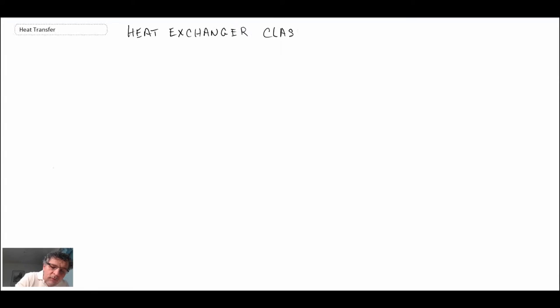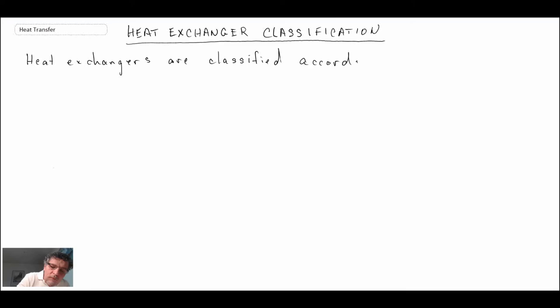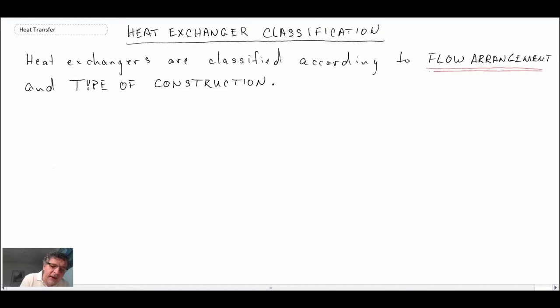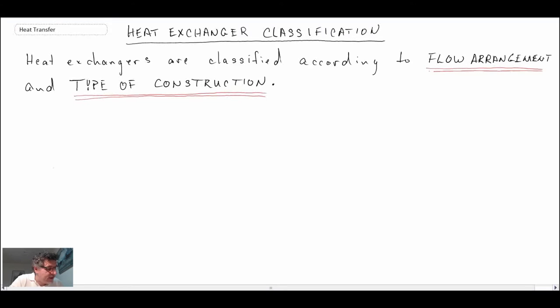In this segment we're going to be looking at the ways that heat exchangers are classified. The two ways we classify heat exchangers are the way that the flow is arranged — you can have parallel flow, cross flow, mixed fluid, or unmixed fluid — and the type of construction. These classifications also guide our analysis in terms of which equations we apply.